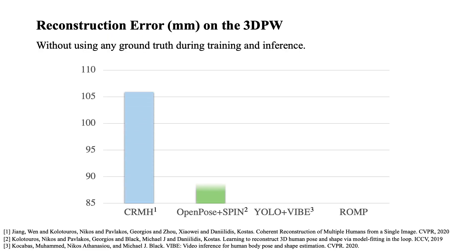This chart shows the reconstruction error of recent state-of-the-art methods on the 3DPW dataset. All methods directly evaluate the entire dataset without using ground truth during training and inference. SPIN and VIBE are single-person methods that rely on OpenPose or YOLO to detect the person in general multi-person cases. CRMH is built on the complex Faster RCNN framework. ROMP reduces the reconstruction error relative to these state-of-the-art methods by a significant margin.